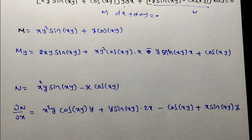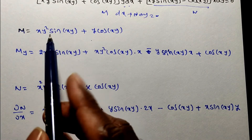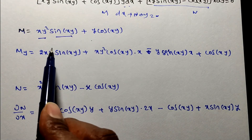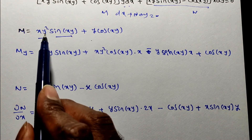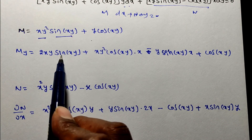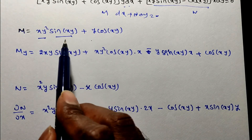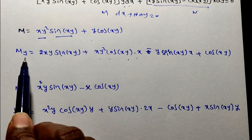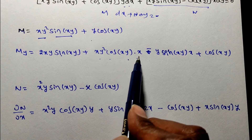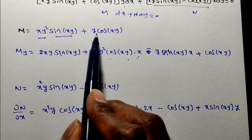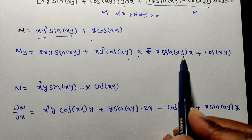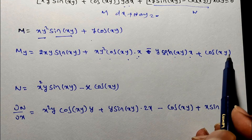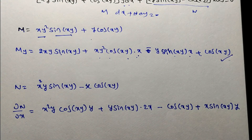Now I find ∂M/∂y. Multiplying y inside M gives xy²·sin(xy) + y·cos(xy). Applying the product (uv) rule: the derivative gives 2xy·sin(xy) + x·y²·cos(xy) — inner derivative with respect to y is x — then for y·cos(xy): minus y·sin(xy)·x plus cos(xy). So that is ∂M/∂y.